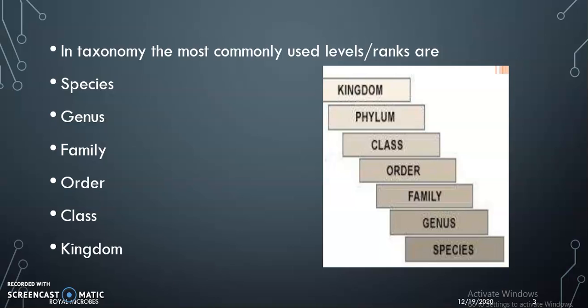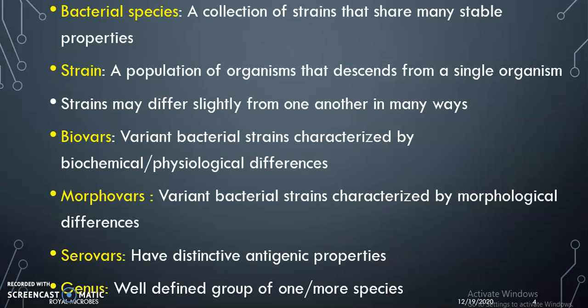The most commonly used levels or ranks in taxonomy are species, genus, family, order, class, and kingdom.